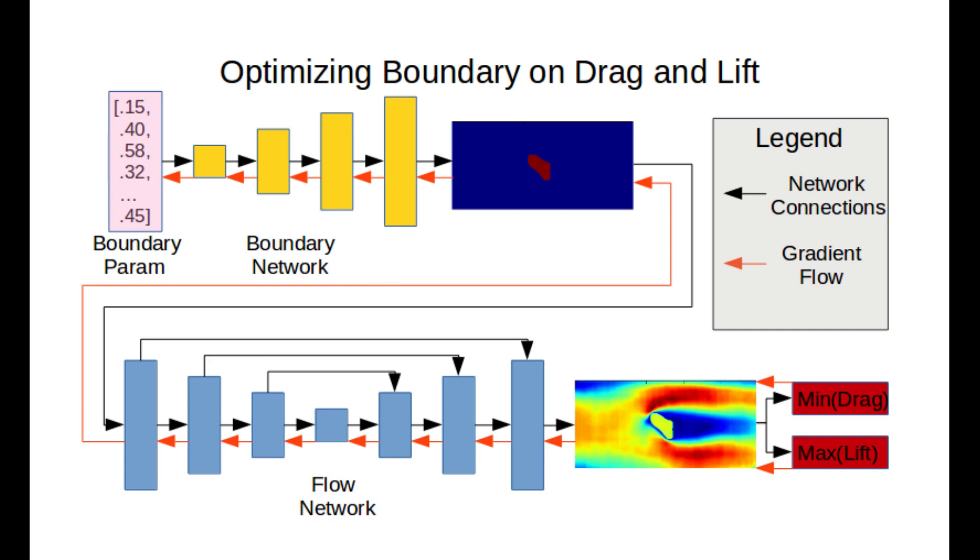By following the red arrows, we see the boundary params can receive a gradient with respect to the values of drag and lift. We can then use these gradients to minimize or maximize these values.